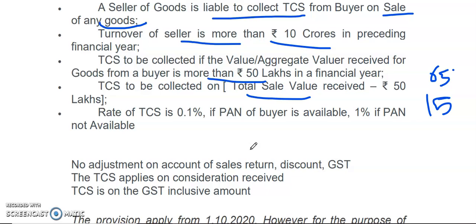The question is: what is the rate of TCS? The rate of TCS is 0.1%. Further, if the PAN of the buyer is not available, then the rate of TCS is 1%. So, if PAN is available the rate is 0.1%, and if PAN is not available the rate of TCS is 1%.